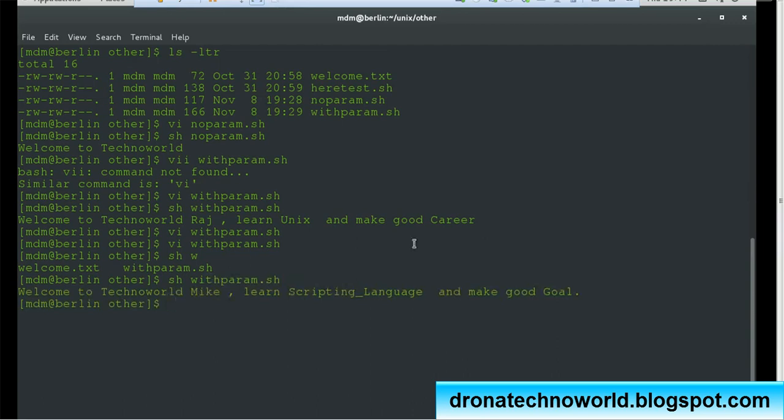We passed 'Mike', 'scripting_language', and 'goal'—these three parameters. Let's execute this. So it correctly printed: 'Welcome to Techno World Mike, learn scripting_language and make good goal'. So it prints whatever you pass as a parameter.